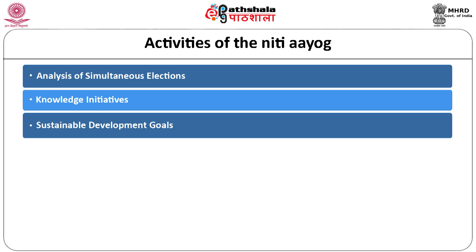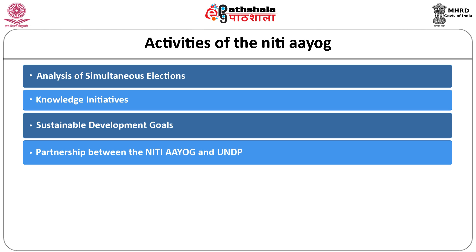Next activity is partnership between NITI Aayog and UNDP. UNDP's partnership with NITI Aayog started in India earlier with the Planning Commission in 1999. UNDP supports six projects with NITI Aayog with the objective to strengthen human development, planning and diversity. Some of UNDP's highest impact projects with NITI Aayog include human development towards bridging inequality, strengthening capacities for decentralized planning, capacity development for district planning, strengthening state plans for human development, and rural decentralization and participatory planning for poverty reduction.